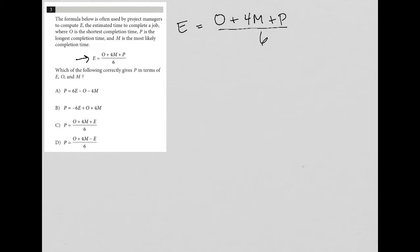So then it says the estimated time to complete a job. That's what E is, where O is the shortest completion time. Just going to underline this stuff because that's important. P is the longest completion time and M is the most likely completion time.